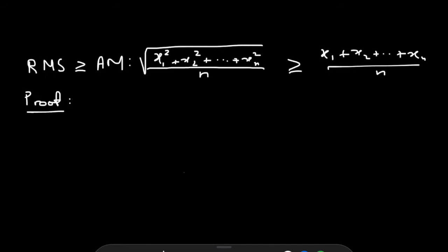The first part of the proof is to show that the root mean square is always greater than or equal to the arithmetic mean of a set of n numbers. To do this, we're going to work backwards — meaning we start at our desired inequality and manipulate it until we arrive at a statement we know to be true. If we were to actually write the proof, we would start at the true statement and manipulate it to arrive at our desired inequality.